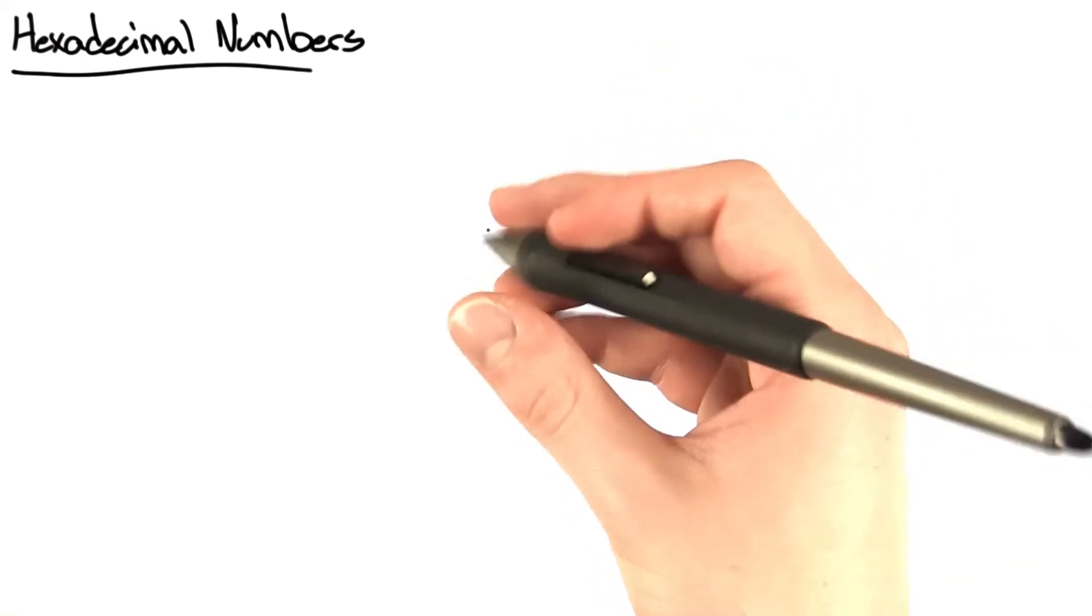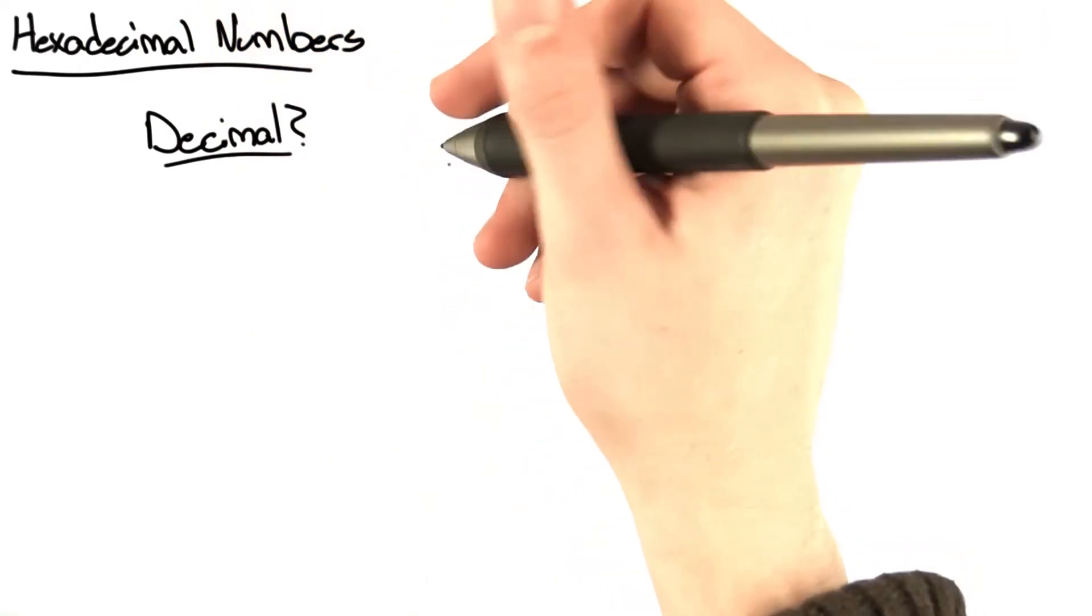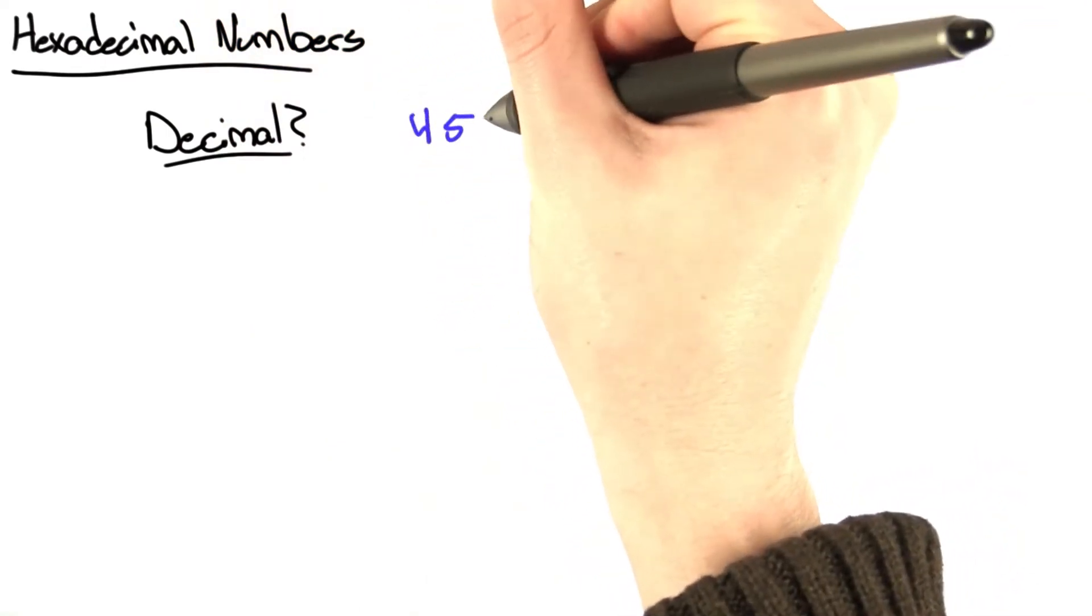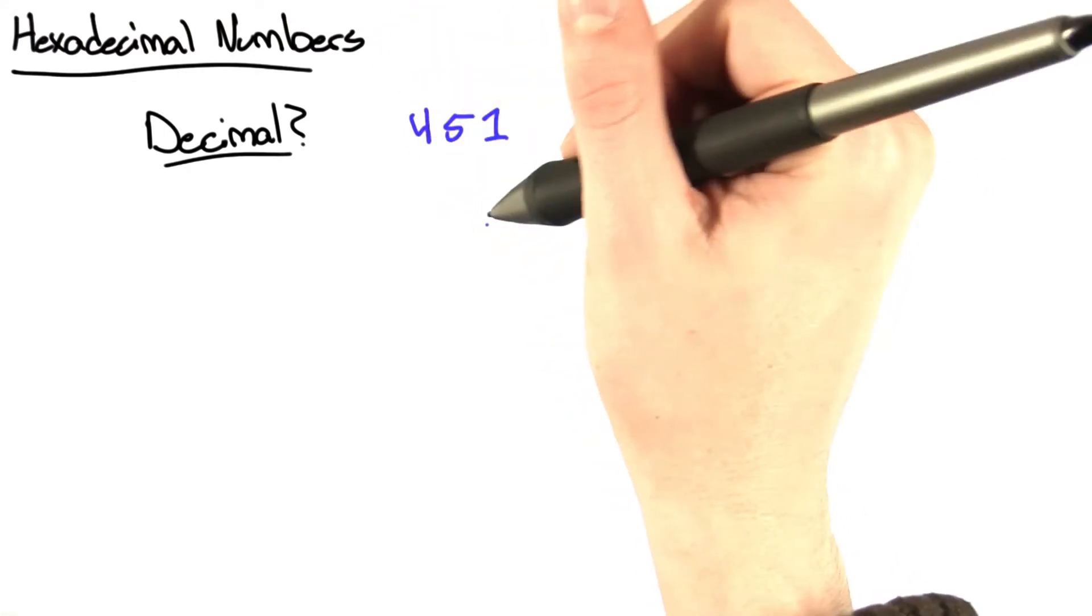So what is a hexadecimal number? Well, more importantly, what is a decimal number? Let's go over this very quickly. If you have, let's say, a number you wrote out, 4, 5, 1, we consider this the 1's place,